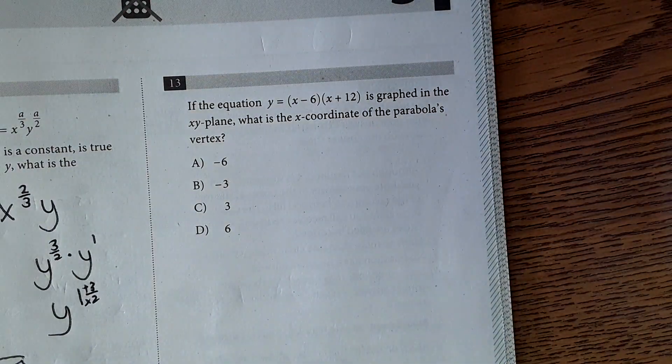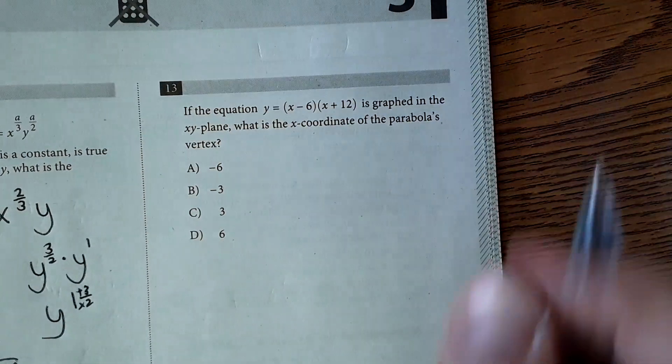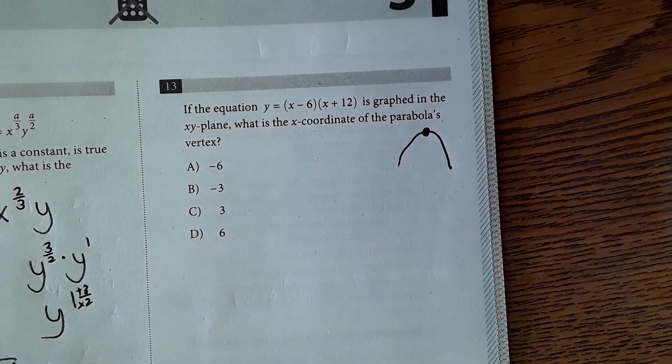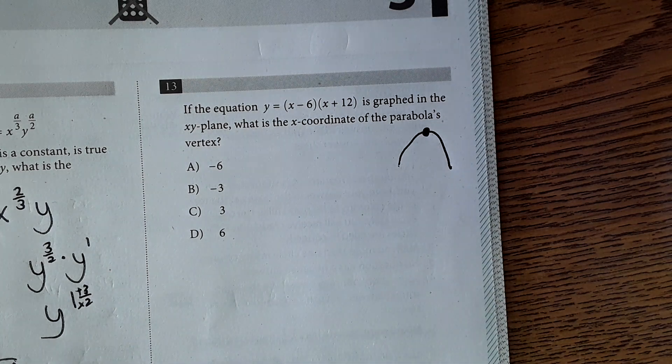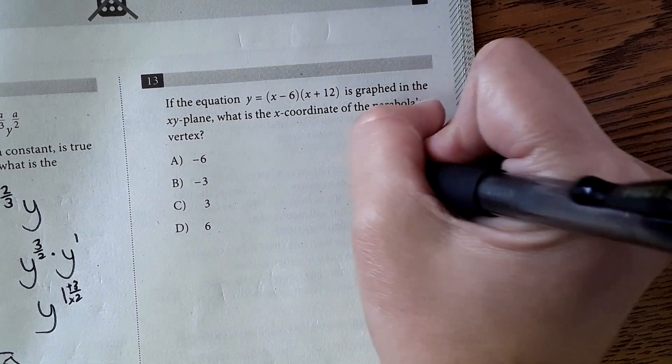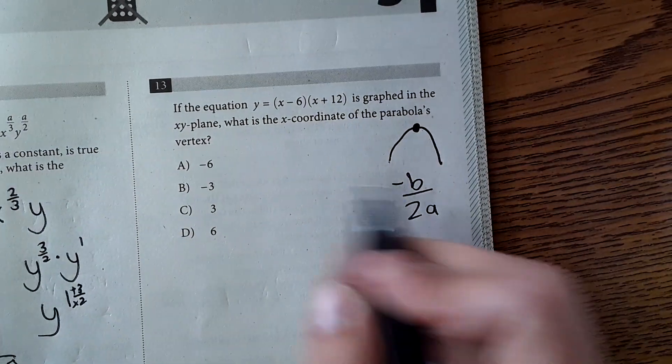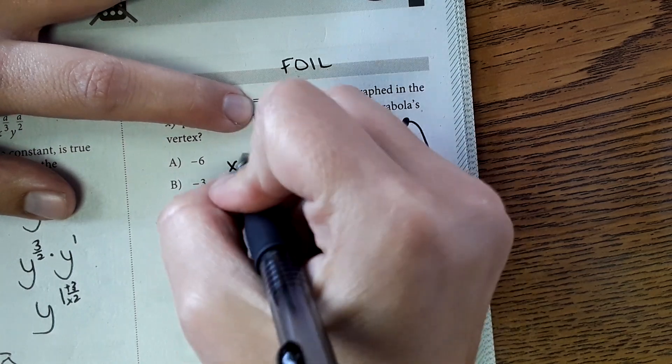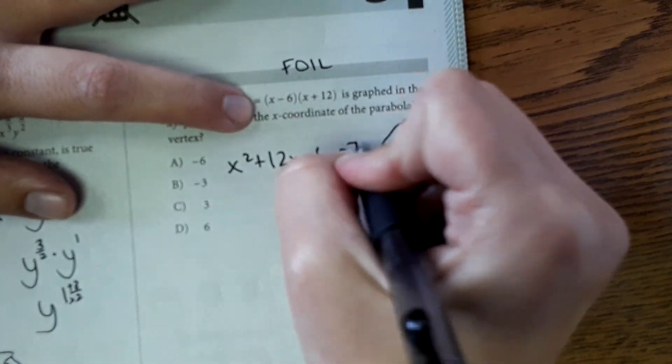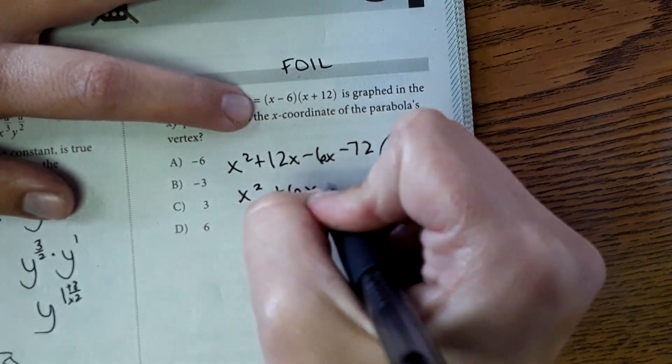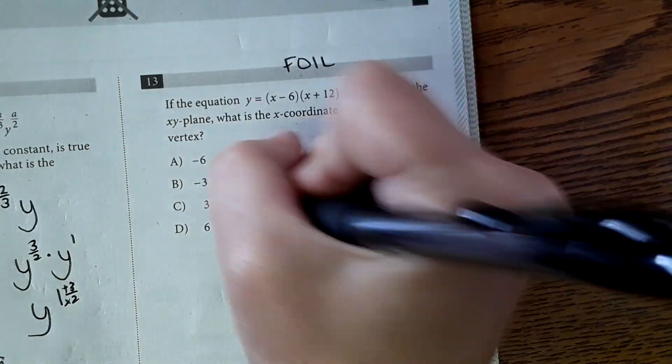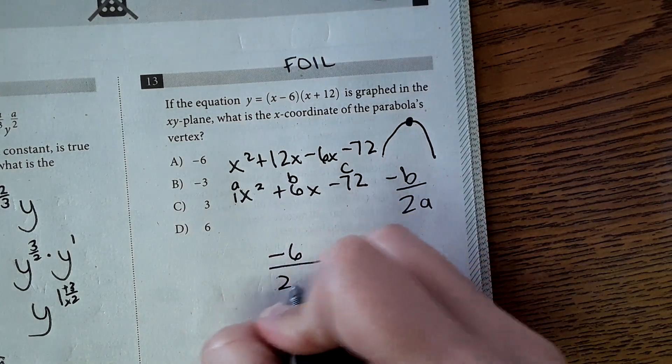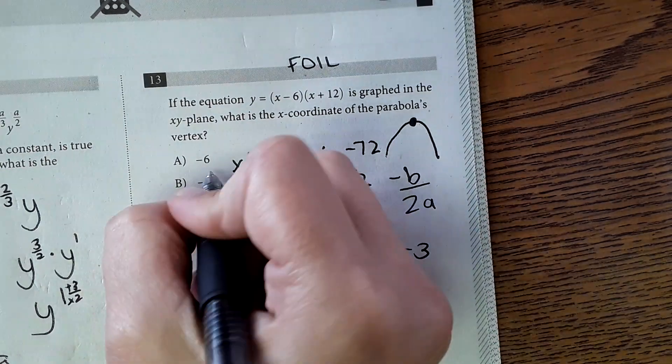Number 13. If the equation y equals x minus six times x plus 12 is graphed in the xy plane, what is the x-coordinate of the parabola's vertex? Okay. So parabola is like this. The highest point right here, there is an equation for that. The equation is negative b over 2a. Let me make sure I said that right. Yes. Negative b over 2a is that highest point. But in order to get b and a, we need this in standard form. So we're going to foil this or factor it out. First, x squared, outside 12x minus 6x minus 72. x squared plus 6x minus 72. We get this here. So our a right here would be the coefficient one. Our b is right here. And this is our c. So using this negative 6 over 2 times 1, negative 6 over 2 equals negative 3. And that is our answer b.